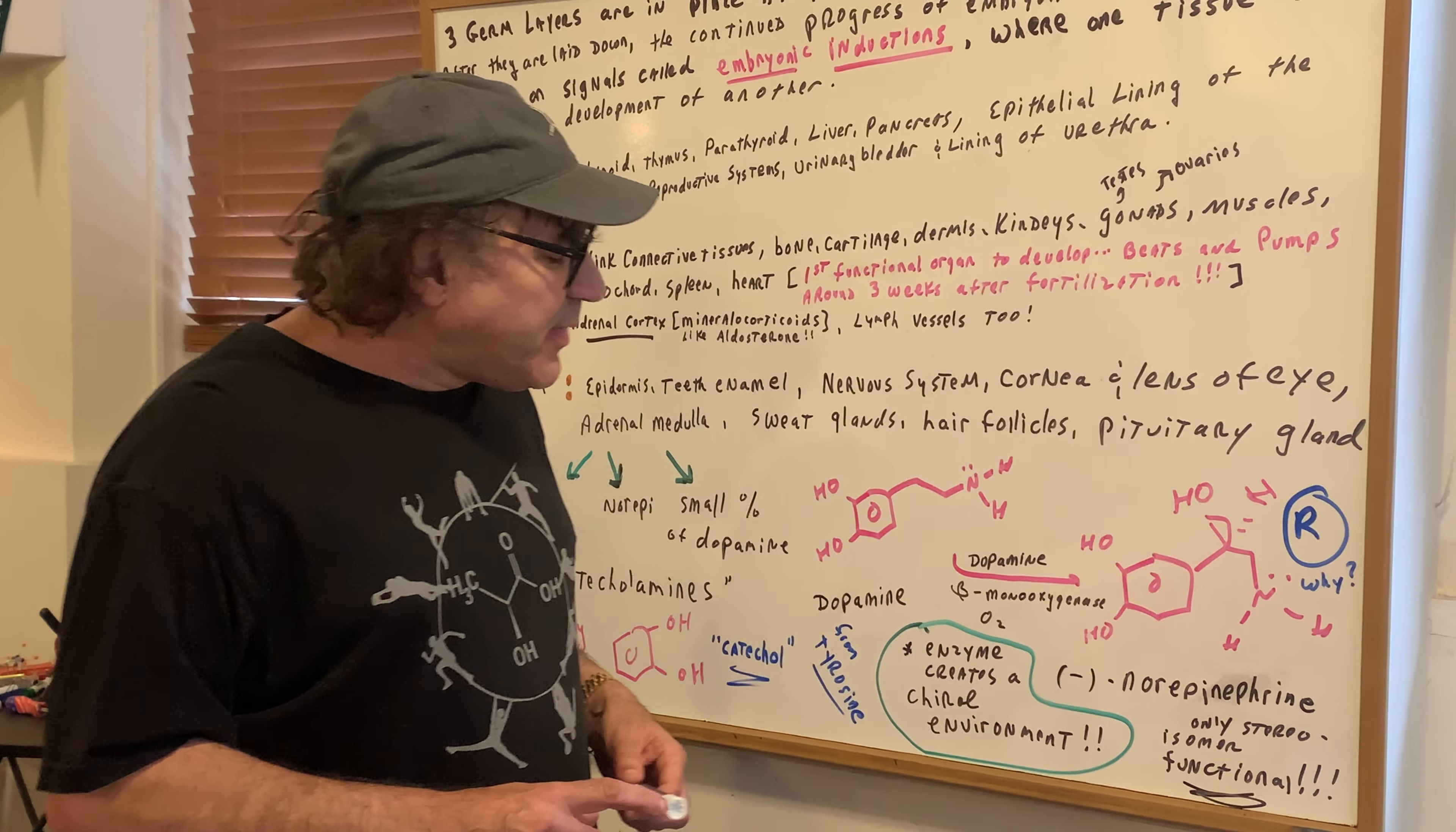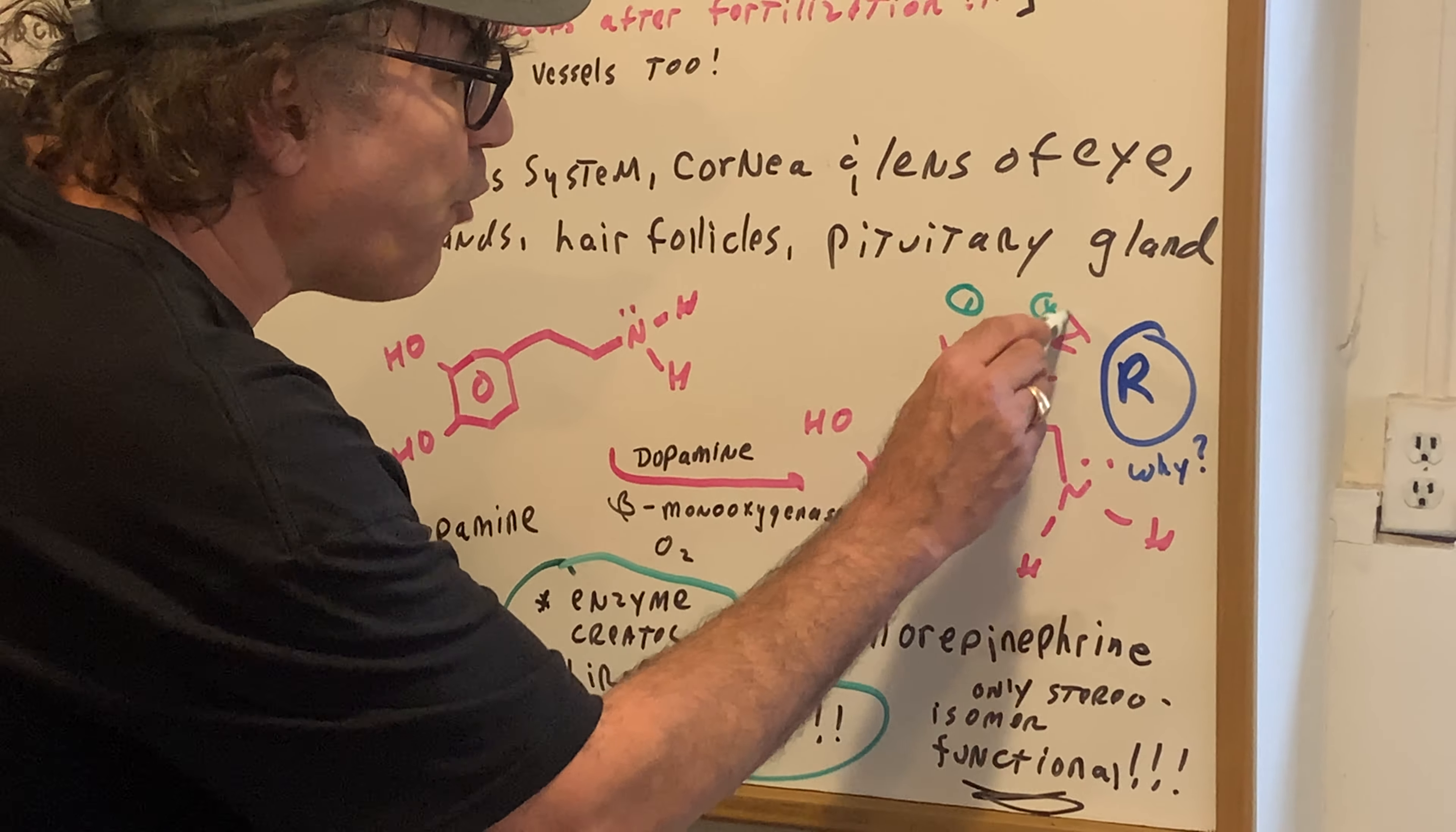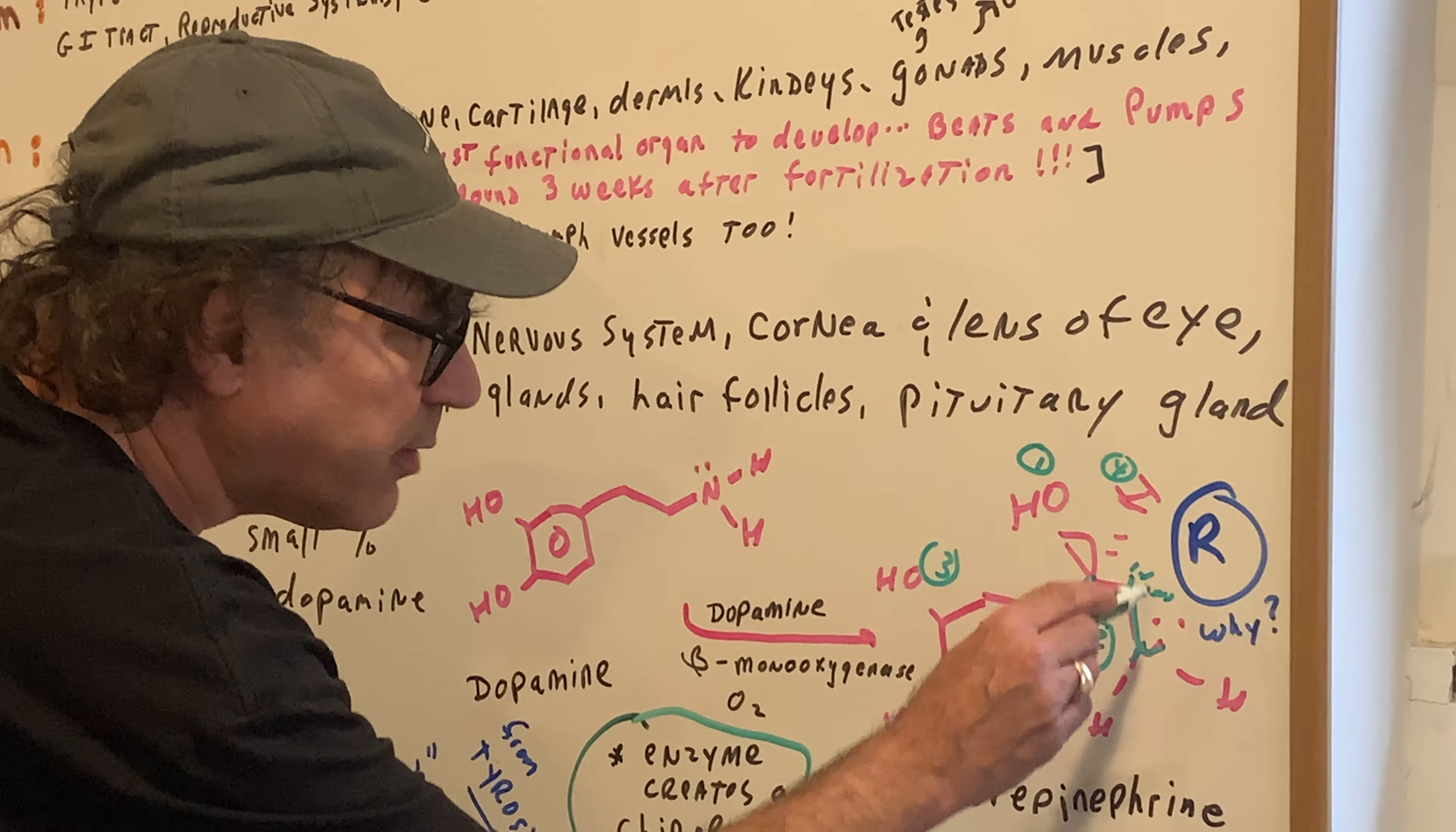If you remember the Cahn-Ingold-Prelog rules from organic chemistry, also we call them the CIP rules. If I asked you, instead of saying minus norepinephrine, would it be the R or the S? Here's our chiral carbon right here. We have this is 1, and the H is 4. This is a C, and this is a C, but this is a C that has two H's and an N, where this has just all C's. So therefore, the N comes first, way more than the O's, which are too far over. So that would mean that this would be 2, this would be 3. So when you come around, this is an R.